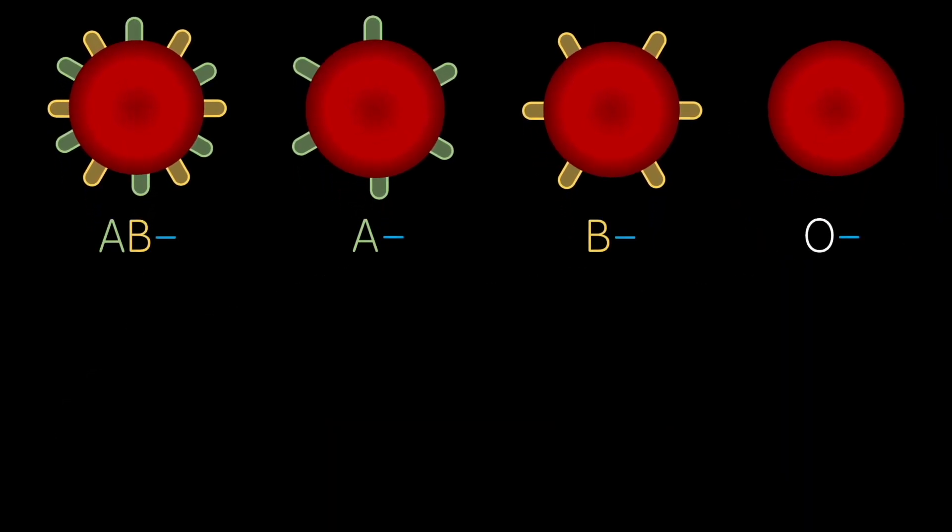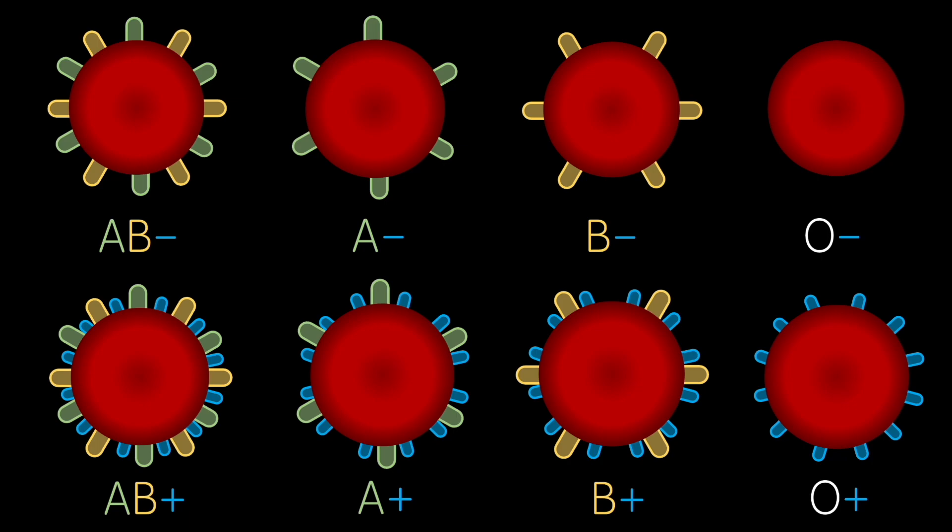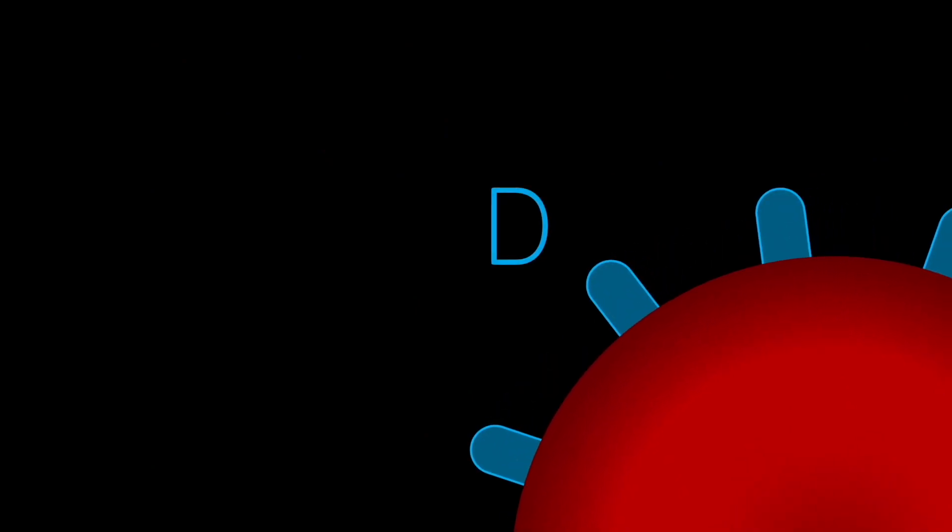All of the previously mentioned blood types exist in both positive and negative forms of the rhesus blood type, named after the rhesus monkey in which the relevant antigen was first discovered. This is the D antigen. Blood cells are positive in its presence and negative in its absence.